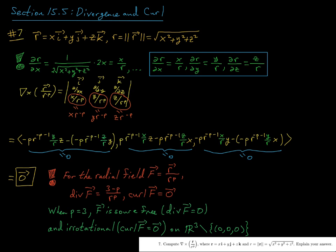So in other words, it's source-free, and its curl is zero, so it's irrotational. And that's true on its domain, which is all of R³ excluding the origin. Okay, now in problem seven it does say explain your answer as to why the curl of this radial field is zero.